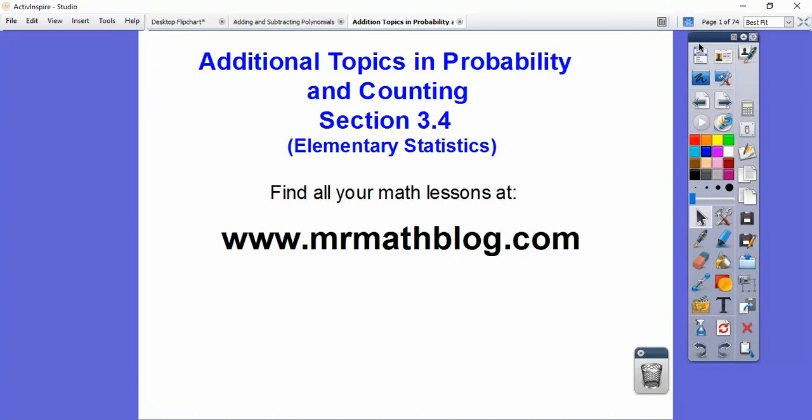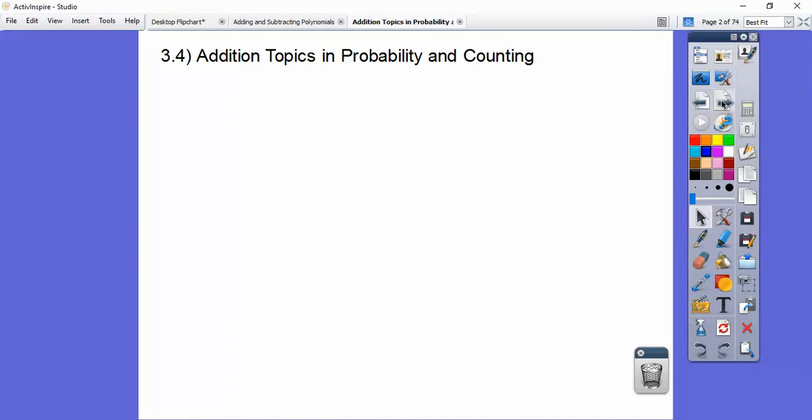Hey folks, this is additional topics in probability and counting. This is where we're doing permutations and combinations. So this is section 3-4 in our textbook. Here's some additional topics in probability and counting.